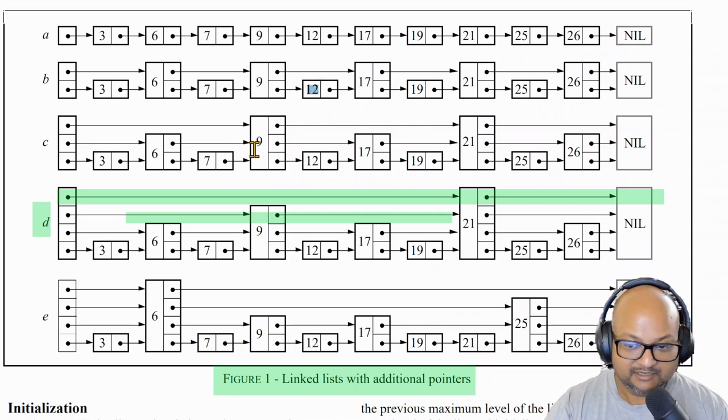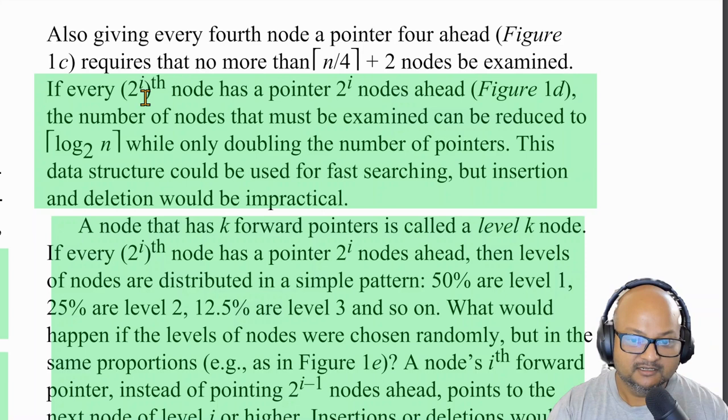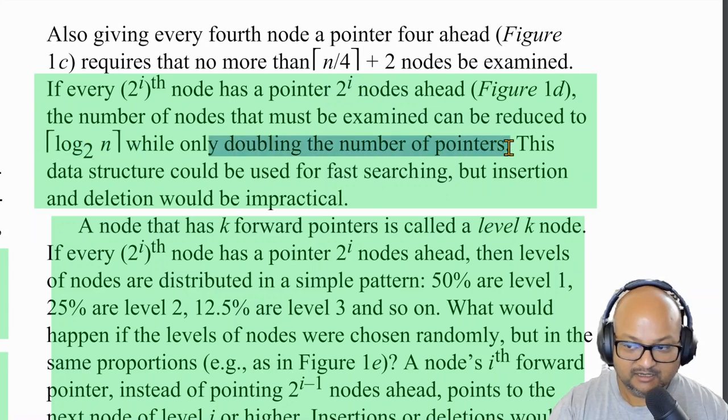So let's carry this reasoning one step further. If you had a linked list data structure where every fourth node—for example this node containing nine—had additional links out to a node four ahead of itself, you would then require at most n by four lookups to find an element. And this brings us to the generalization, which is the core idea behind skip lists: if every two to the ith node had a pointer two to the i nodes ahead of it, then finding elements in such a data structure would be order log n. And in terms of space you would only be doubling the number of pointers.